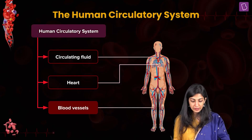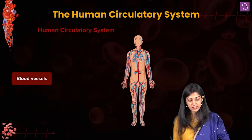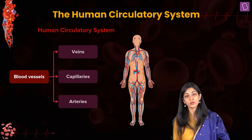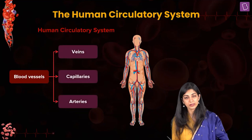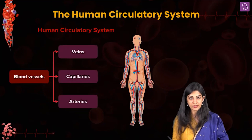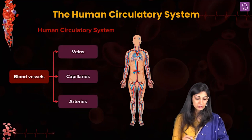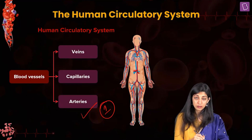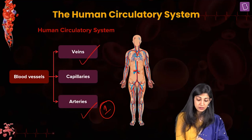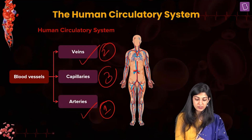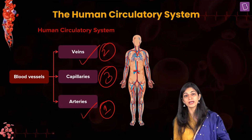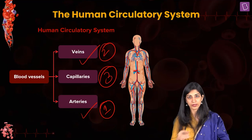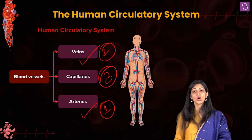Now, children, there are three kinds of blood vessels in the human circulatory system: the arteries, the veins, and the capillaries. A student asks what they are, and the teacher responds: I'll tell you.